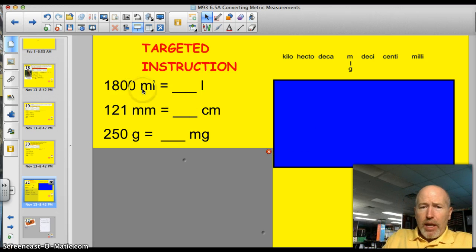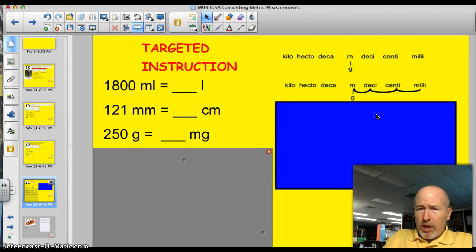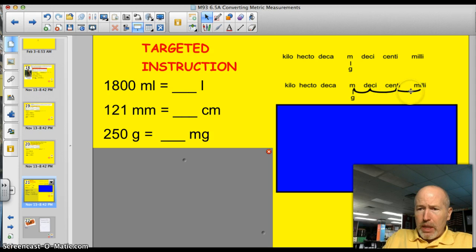Let's see how you did. The first one, 1,800 milliliters is how many liters? Let's slide this down. So I'm going from milliliters to liters, right? That's a base unit. So I'm going to make 1, 2, 3 jumps to the left.